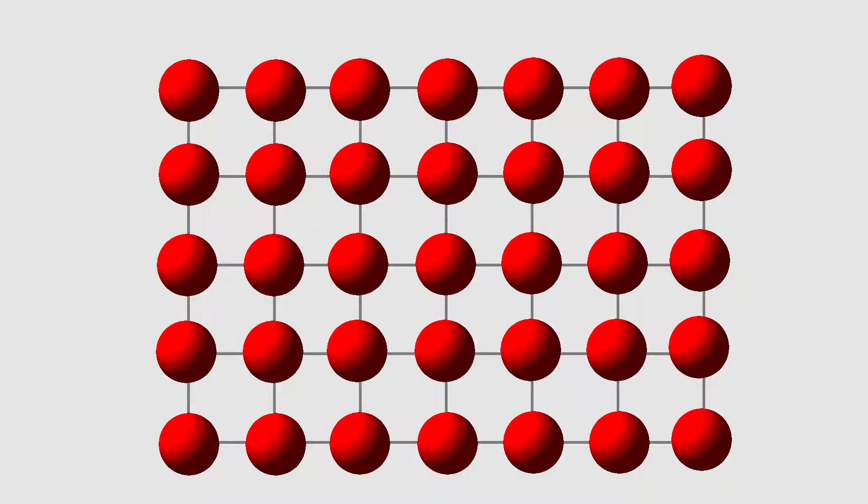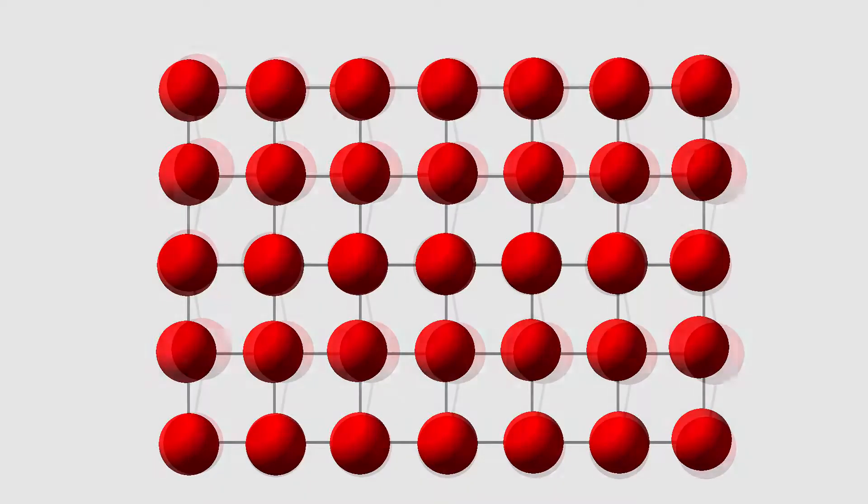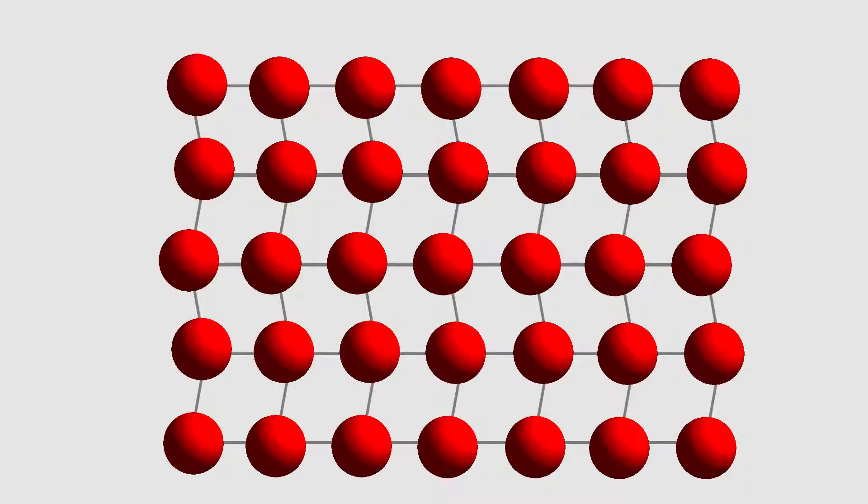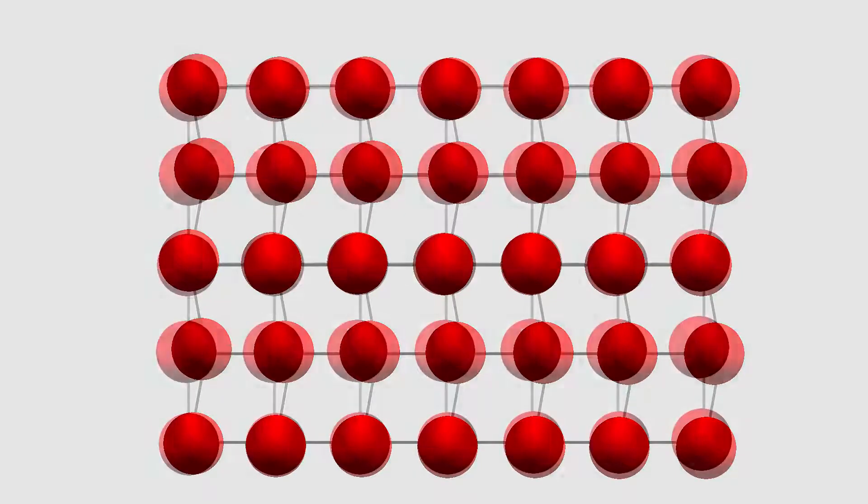At temperatures above 500 degrees Celsius or so, the nitinol can be shaped into whatever form is useful. For example, the spring I showed you earlier. When it cools, the crystal structure, the arrangement of the atoms, changes only slightly.